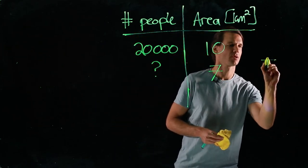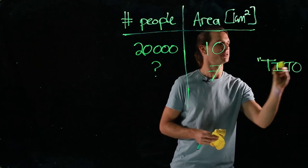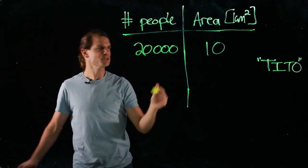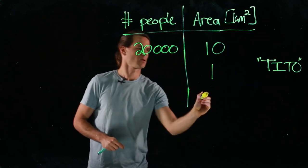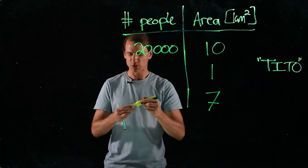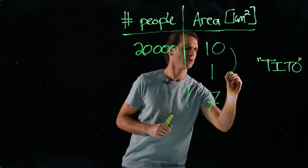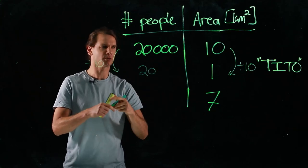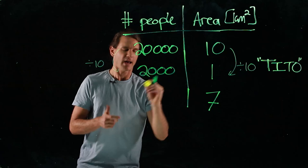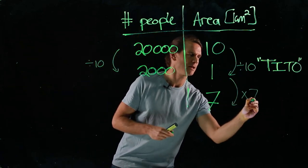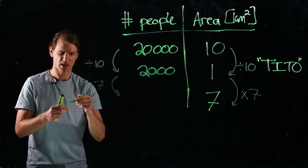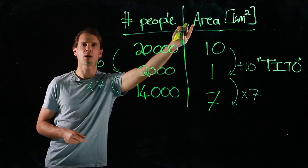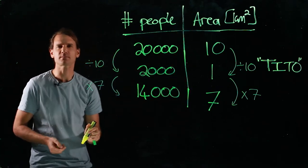I'm going to introduce the 'take it to one' method, or TITO method. Instead of going directly to seven, I'll first take 10 to 1 by dividing by 10 — what we do to the right we do to the left — giving us 2,000 people per square kilometer. Then to get from 1 to 7 we multiply by 7, and on the left-hand side as well, landing on 14,000 people in seven square kilometers.